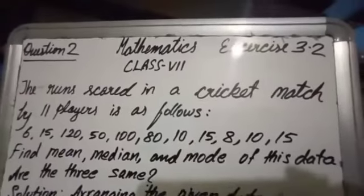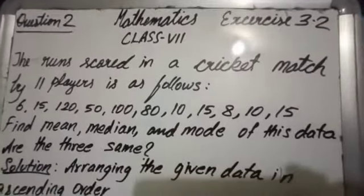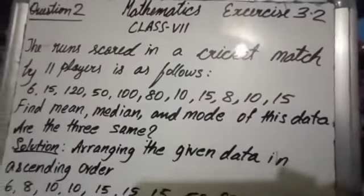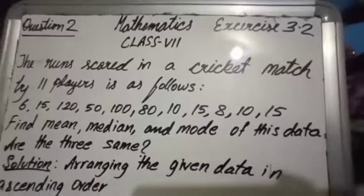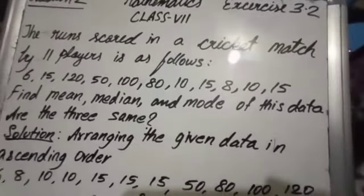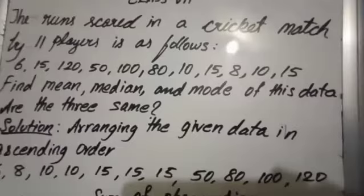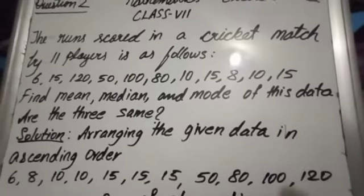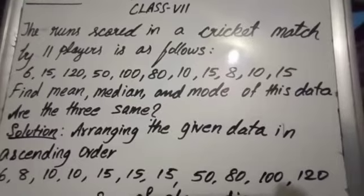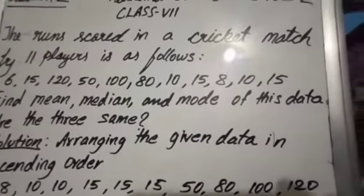Arranging the given data in ascending order helps us to find out mode and median. So let us arrange the numbers in ascending order: 6, 8, 10, 10, 15, 15, 15, 50, 80, 100, 120.